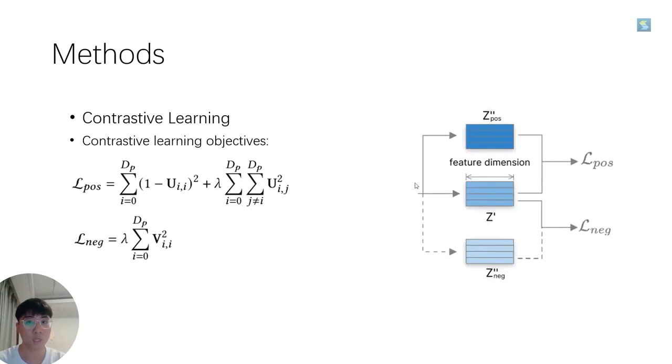For the contrastive learning module, we use Barlow Twins loss to optimize the distance between positive pairs. Besides, we design a loss function for optimizing the negative pairs.